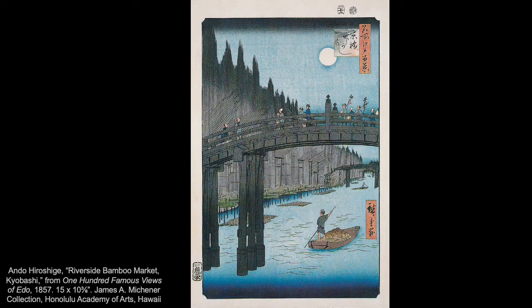In Ando Hiroshige's Riverside Bamboo Market from 1857, there are actually multiple focal points — the moon, the bridge, and the boat — none really demanding more attention than the others. The bridge is the largest shape, so it naturally grabs us. Contrasting values and sharp shapes pull us toward the moon, while the careful placement of the figure in the boat is visually interesting, with a definite outline that contrasts with the flat light-colored water. The placement of these three focal points with varying distances creates a sense of rhythm that leads the viewer's eye around.